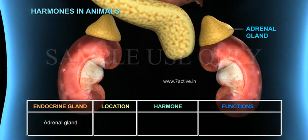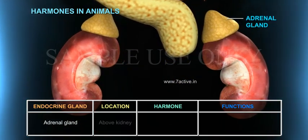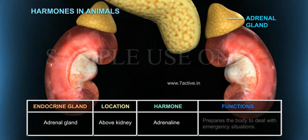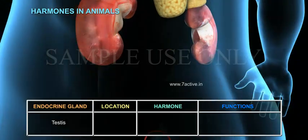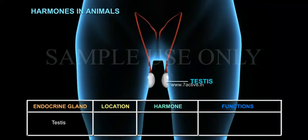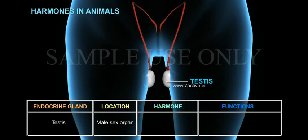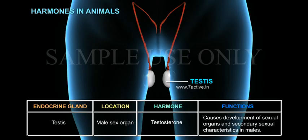The Adrenal gland is located above the kidney. Its hormone is adrenaline, and its function is to prepare the body to deal with emergency situations. The Testes are the male sex organ. Their hormone is testosterone, which causes the development of sexual organs and secondary sexual characteristics in males.